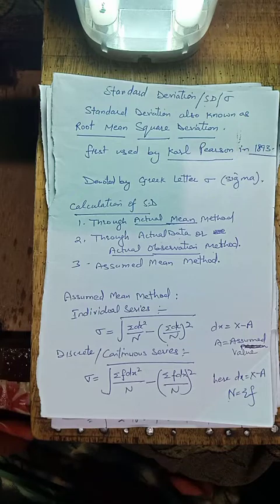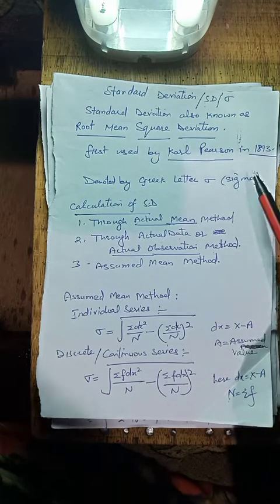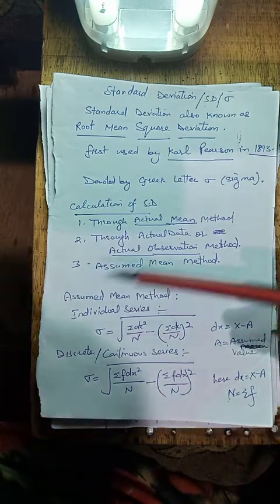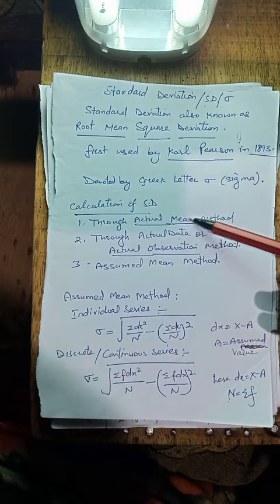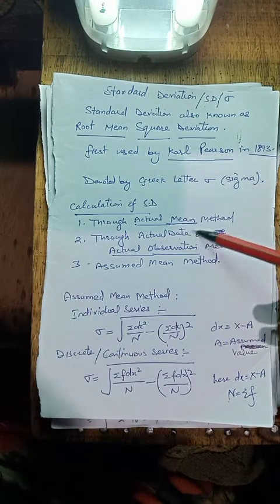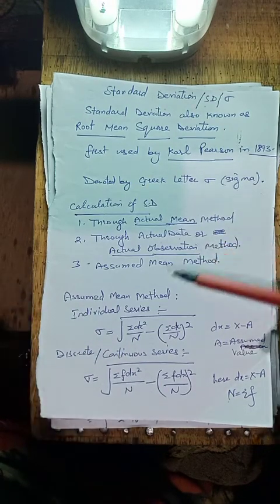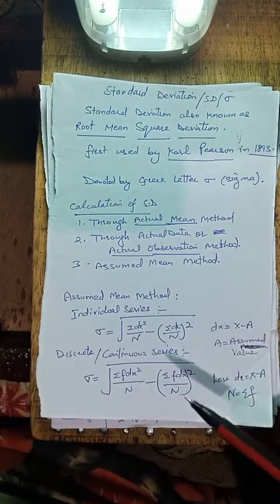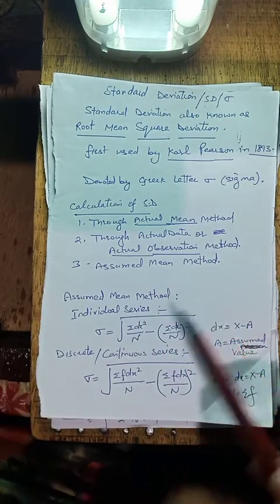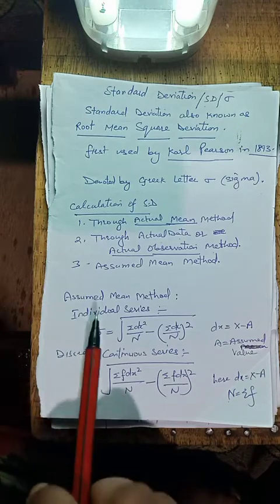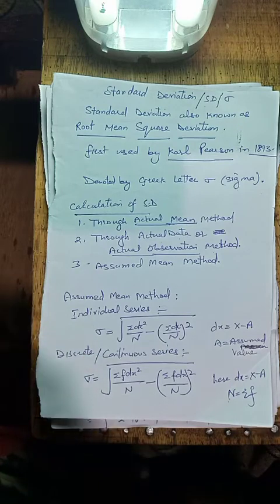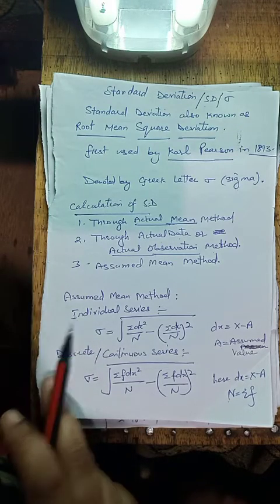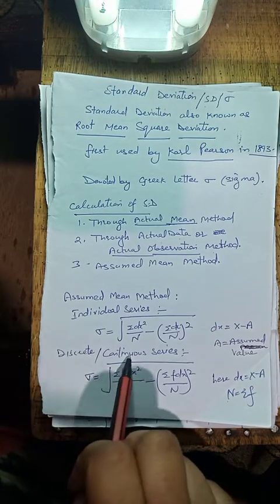Standard Deviation को Greek letter sigma के साथ denote किया जाता है। Standard Deviation is computed by using the actual mean method, actual observation method, and adjusted mean method. As you know, हमारे पास तीन प्रकार की series होती हैं: Individual series, discrete and continuous series.